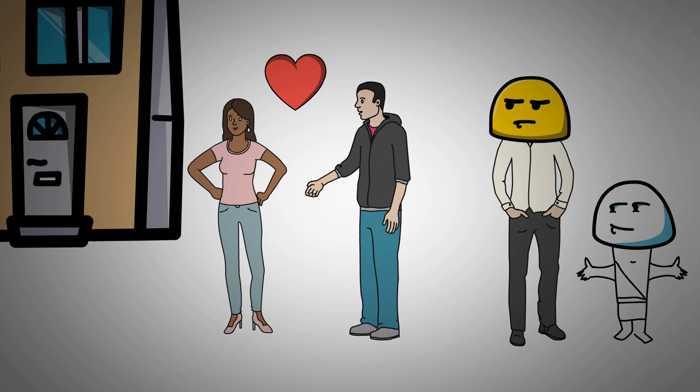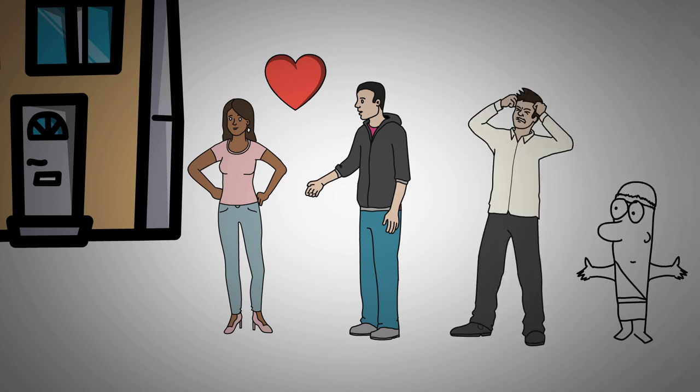Florizel called the two strange men over to witness his betrothal to Perdita. Not knowing that it was his father and his trusted friend, but when they arrived, the king revealed himself and forbade their marriage.